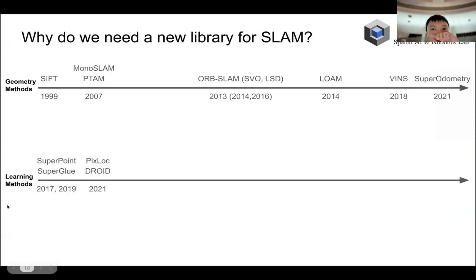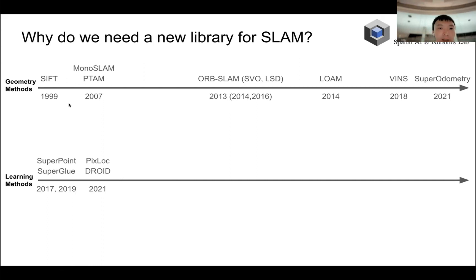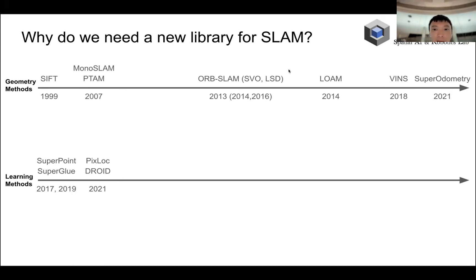You may ask: why do we really need a new library for SLAM? Here I list several milestone SLAM systems in two timelines. The upper timeline is mainly for traditional geometry-based methods, and the lower timeline is for learning-based methods. Starting with feature matching, we have ORB-SLAM in 2013, then LOAM, LeGO-LOAM, and SuperOdometry in 2021. The theory behind SLAM didn't develop much since the seminal work on ORB-SLAM, which may be the most widely used SLAM system until now.